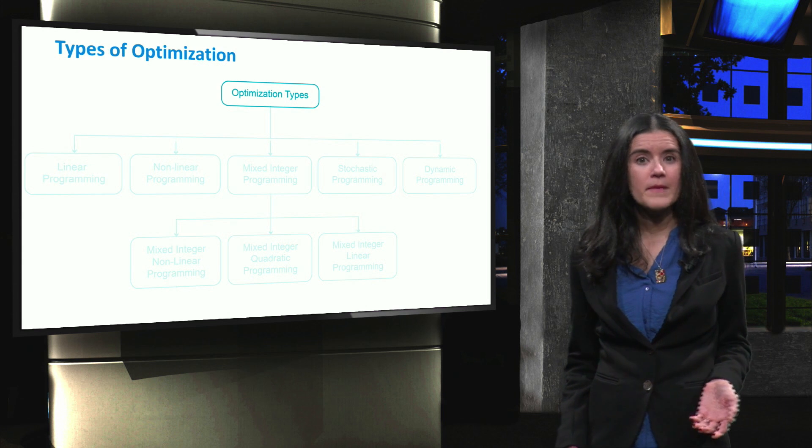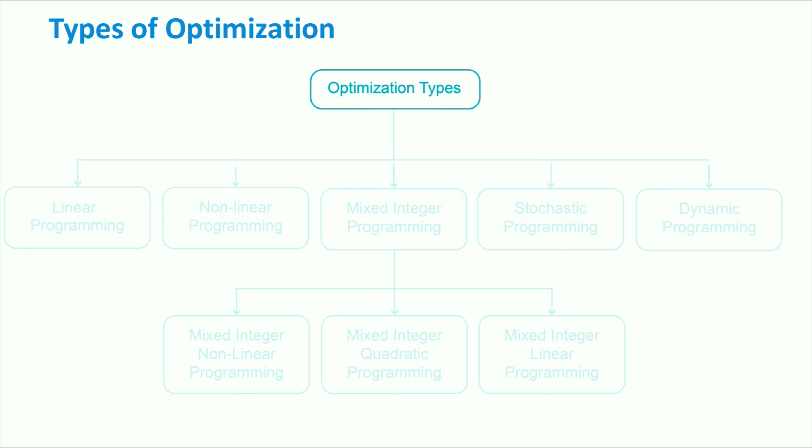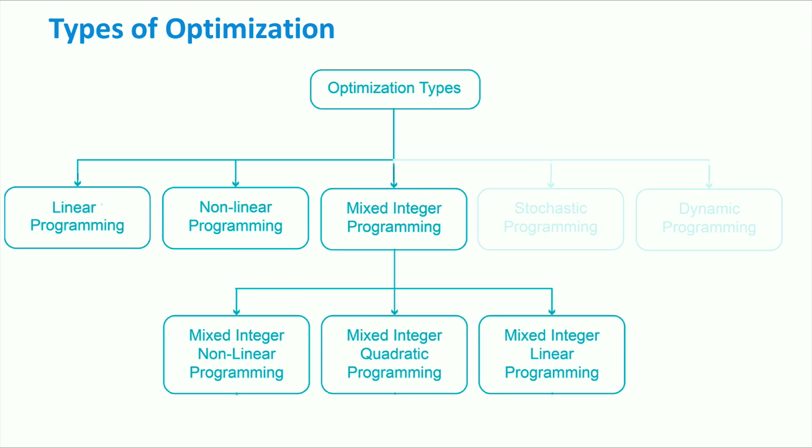Several optimization techniques can be implemented in microgrids. Some of these techniques such as linear and non-linear programming, mixed integer programming, stochastic programming, and dynamic programming have been used in microgrids to solve multi-objective functions where a tradeoff between low operation cost and good energy service is made, for example.